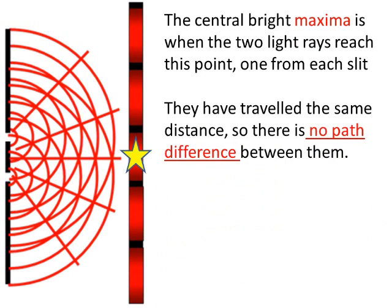It's partly due to the path difference. From those two slits reaching the front there's no difference in the distance traveled between the top slit and the central maxima and the bottom slit in the central maxima. There's no path difference. Here in the first maxima the path difference is equal to one wavelength and the second maxima is equal to two.